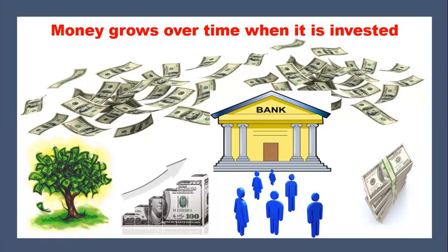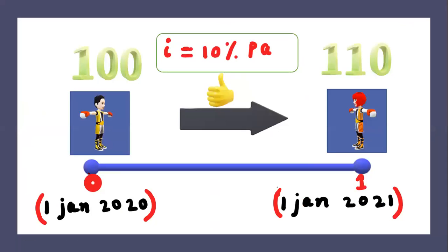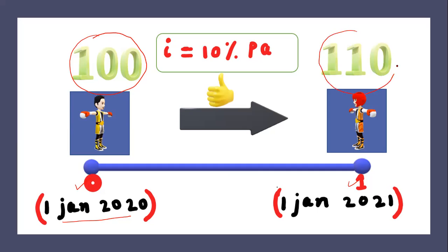Money grows over time when it's invested. We will start with savings initially — savings in the banks. Suppose you saved 100 on 1 January 2020 in a bank and the interest rate is 10%. What is the amount you are expecting to get on 1 January 2021? It's very simple. You will get 10 extra on whatever you deposited. You deposited 100 at time 0. This is called a number line. This is 0 and this is 1. You deposited 100 and you are expecting to get 110 because the interest rate is 10% per annum.